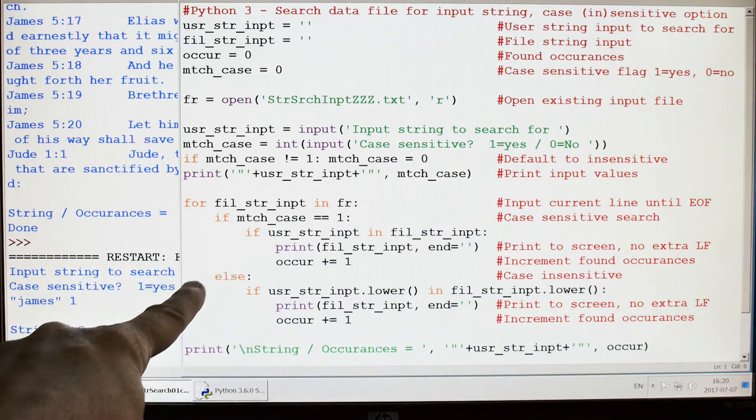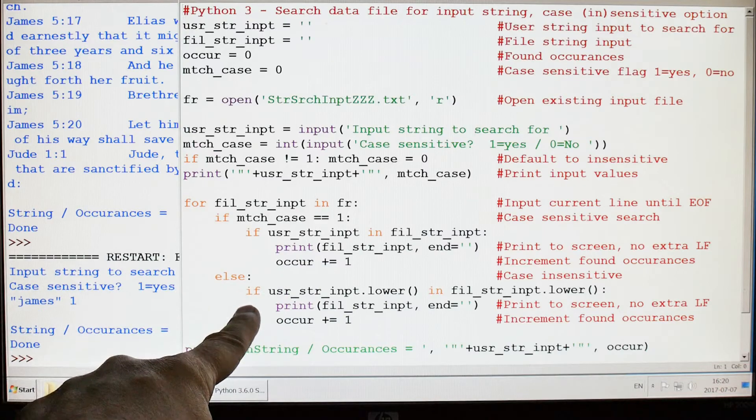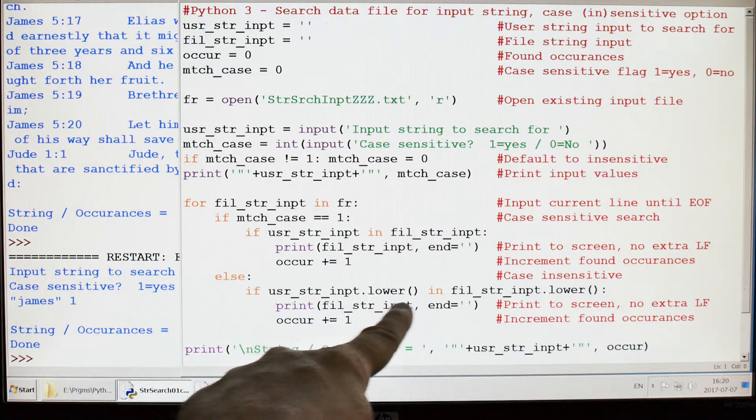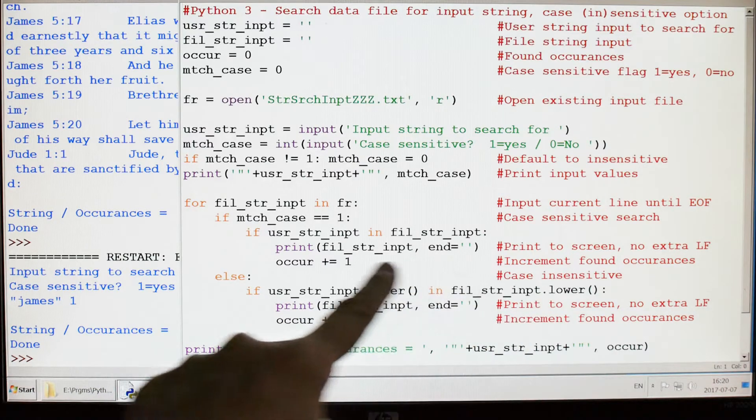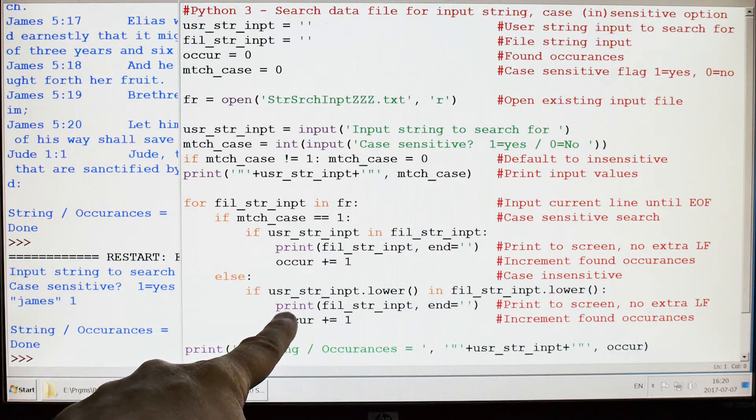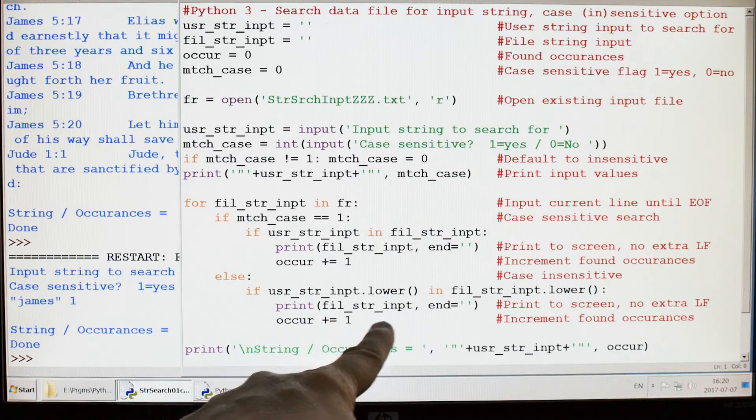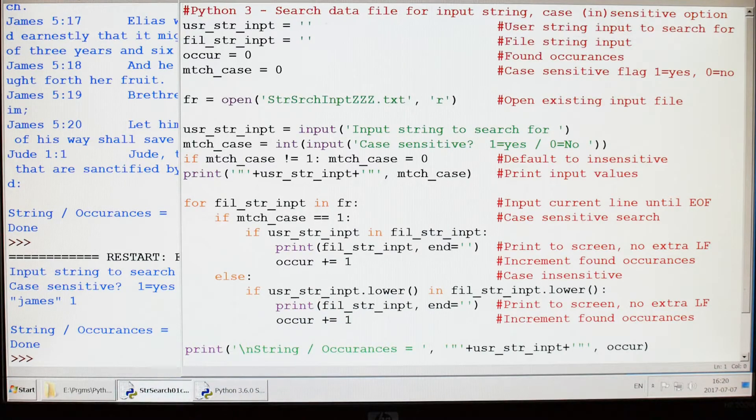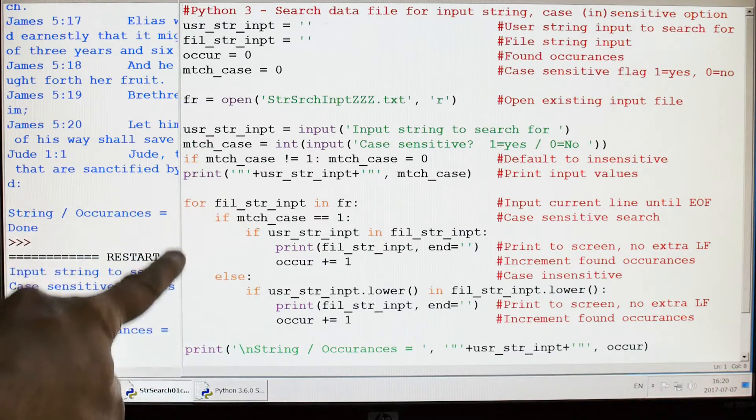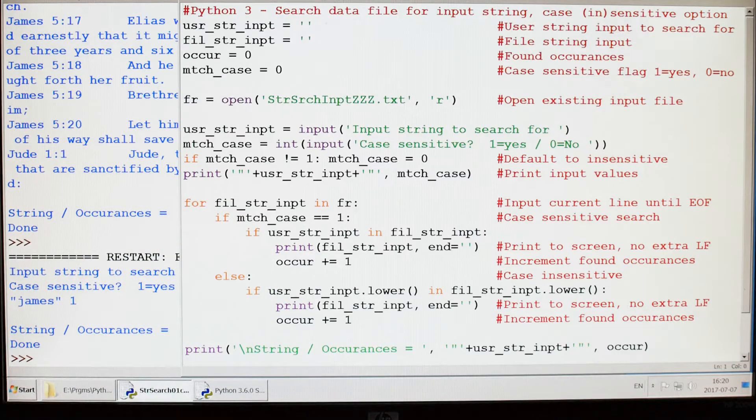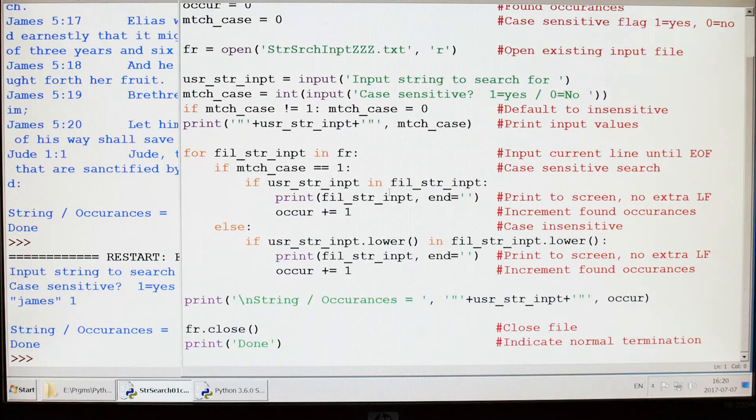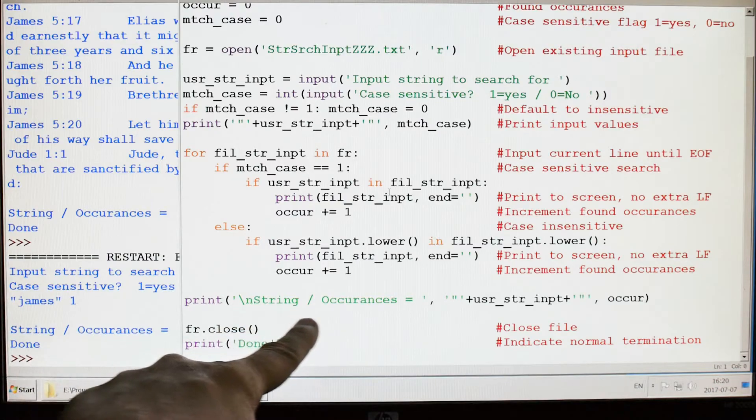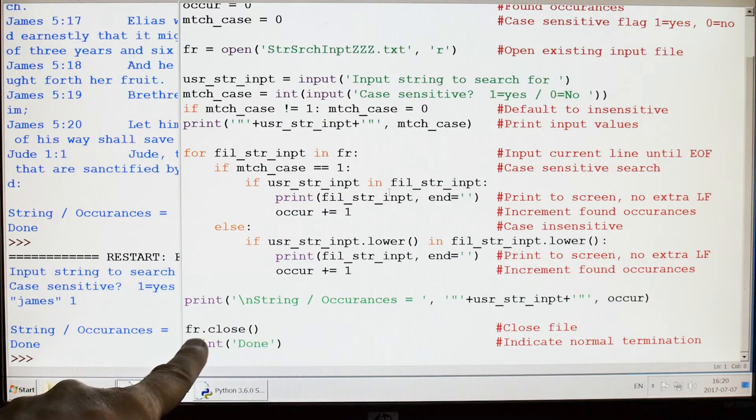If it's not case sensitive, then I'm going to come down here and convert everything to lower when I do my comparison—I've got the dot lower and the dot lower over there. Otherwise it's exactly the same: print the string I found and bump the occurrence by one. It's going to do this loop right here until the end of the file, and then at the end of file it's going to print out the string that was searched for, the number of occurrences, then we're going to close the file and print done.